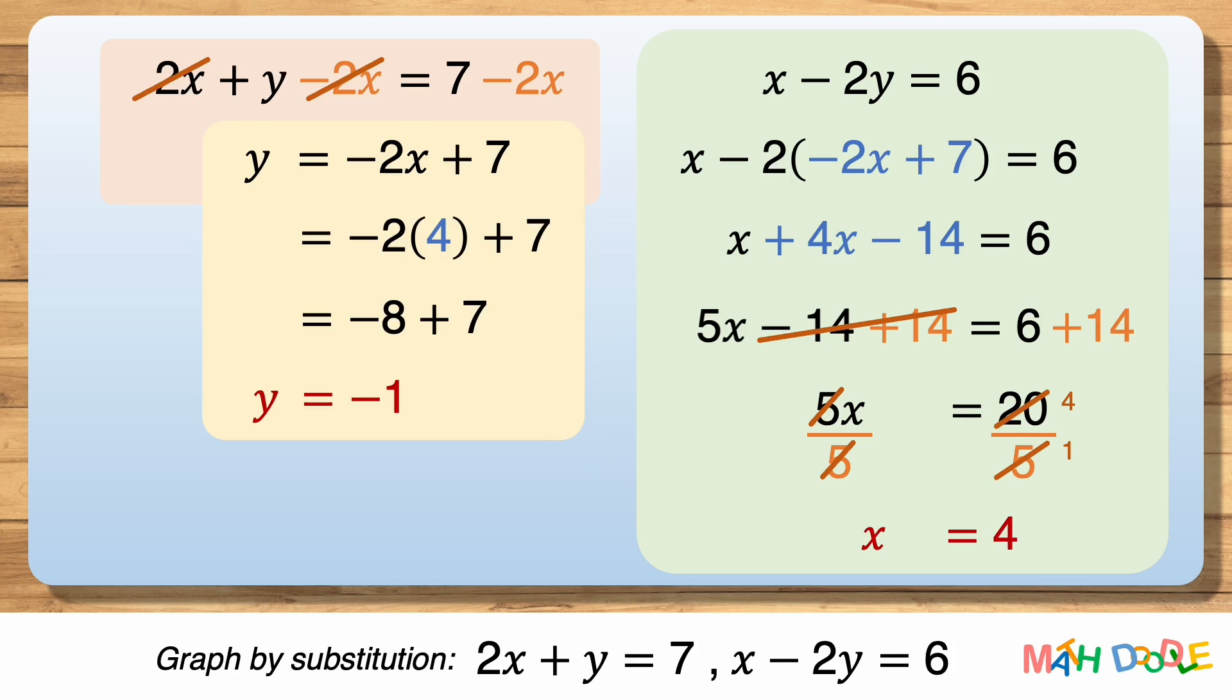Now, this tells us that y is minus 1. So, the values of x and y that satisfy both equations are 4 and minus 1.